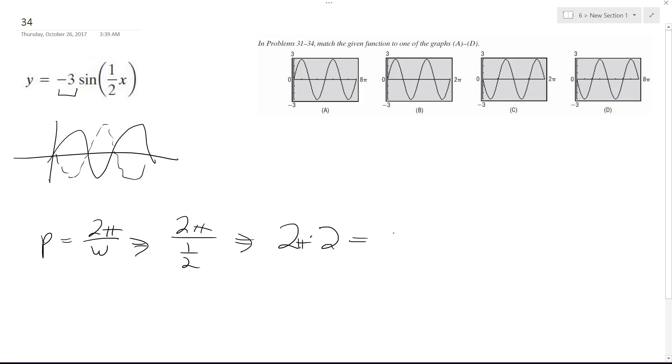So we get 4 pi. So this is an inverted sine graph, it's got a period of 4 pi, so it looks like D is our solution.